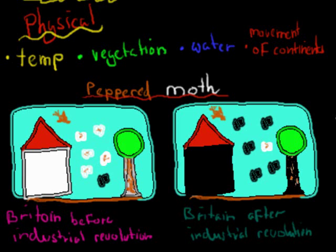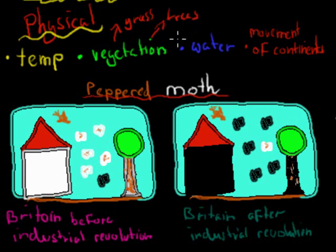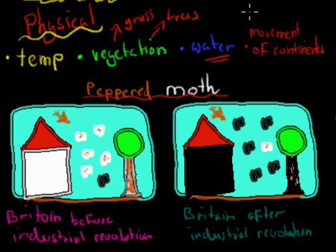The dot point says change in physical conditions in the environment. Physical things include temperature, vegetation, water, and movement of continents. With temperature, I mean temperature itself going from crazy cold to crazy warm. Vegetation refers to things like grass and trees — we had rainforest 50 million years ago in Australia, and now we have more eucalyptus tree and bush environment, which changes the animals that could live there. Water refers to how much water we have — now we're quite dry, but 50 million years ago Australia used to be quite wet, giving you different animals. And the movement of continents is also a physical change — if continents move apart, you have different animals on every continent.